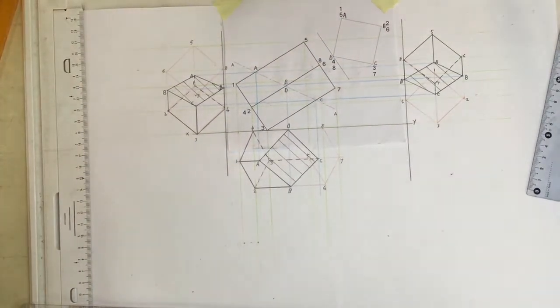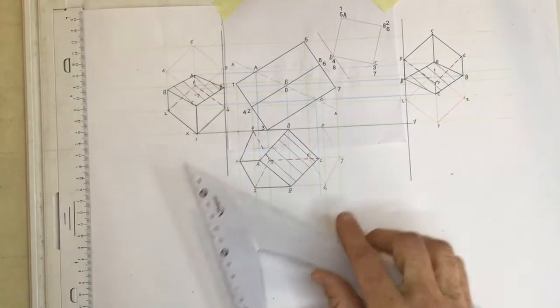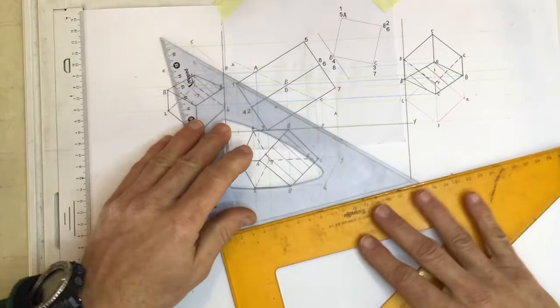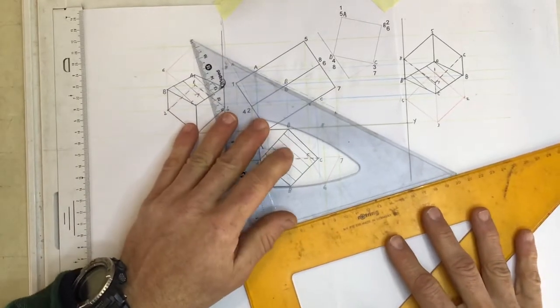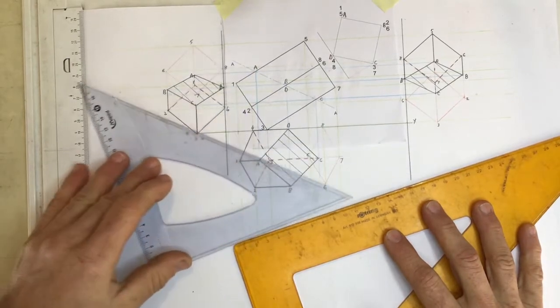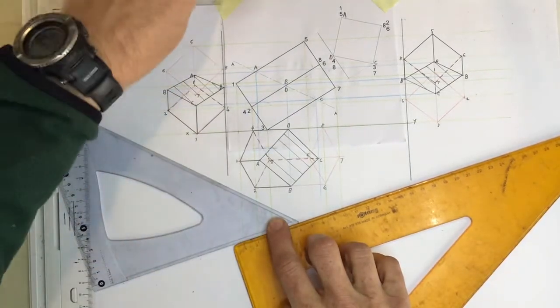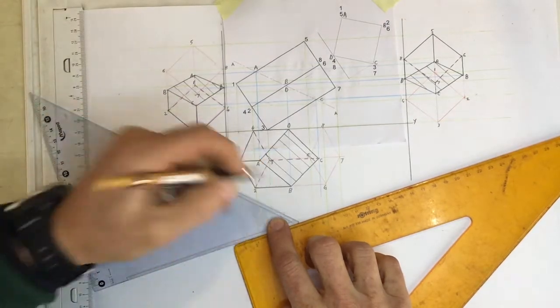How do I do that? Well, there are a number of different ways of doing it. You can take your set squares, line them up like this, and you can slide it out and draw an xy axis over here like that.